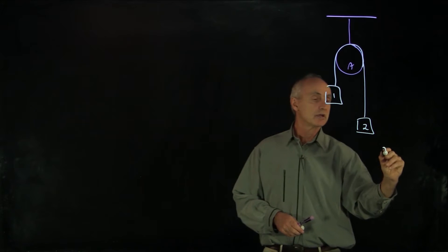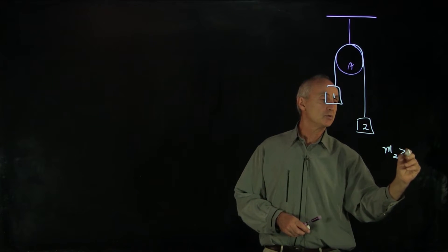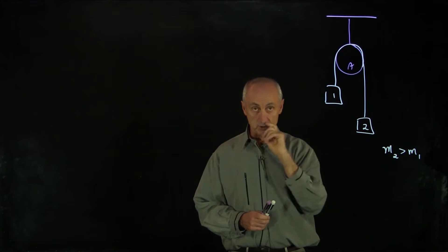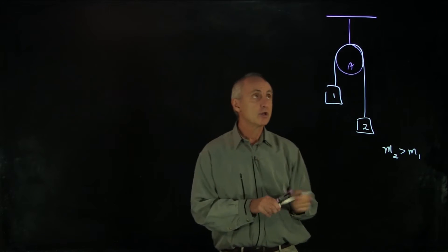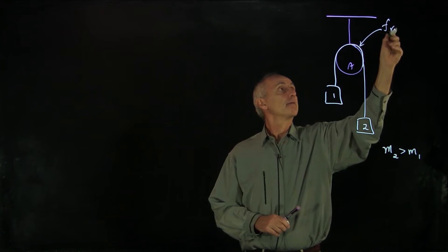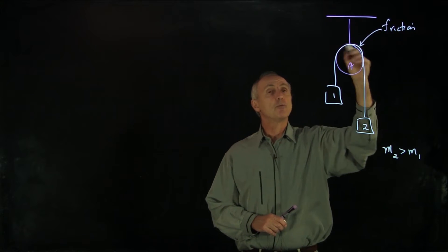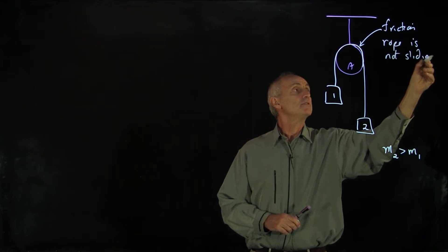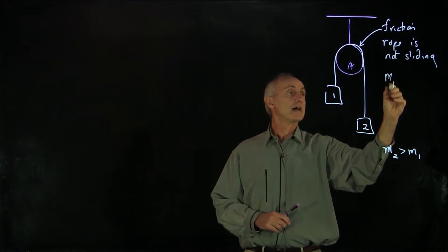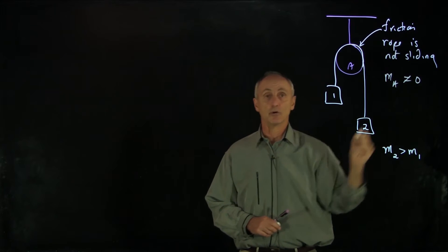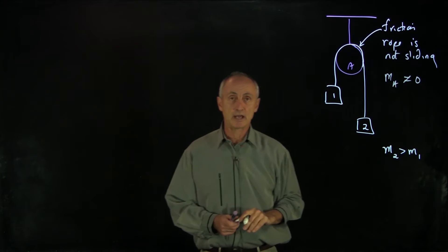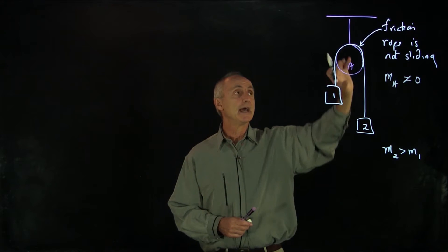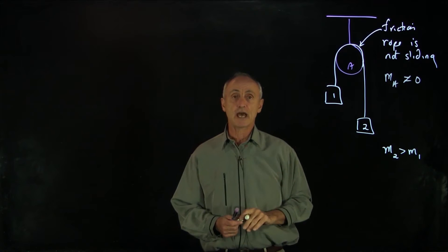We'll say that M2 is bigger than M1, and that gives us some intuition that we expect block two to go down and block one to go up. Now, in this problem, there is friction between the rope and the pulley, so the rope is not sliding. What that means is that the pulley will rotate. And also, the mass of the pulley is not zero. These were all assumptions we made way back when we were analyzing Newton's second law. But now, we have to take into effect that there's some rotational inertia to make the pulley start to have angular acceleration.